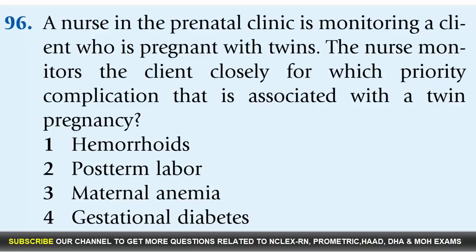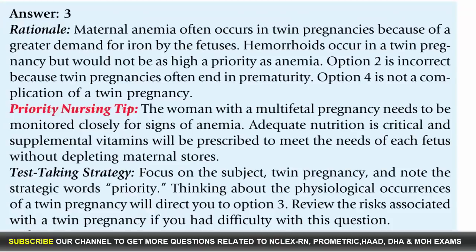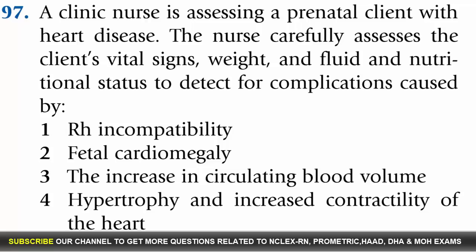Question 96: A nurse in the prenatal clinic is monitoring a client who is pregnant with twins. The nurse monitors the client closely for which priority complication associated with a twin pregnancy? Options: 1. Hemorrhoids, 2. Preterm labor, 3. Maternal anemia, 4. Gestational diabetes. Answer: 3. Rationale: Maternal anemia often occurs in twin pregnancies because of a greater demand for iron by the fetuses. Hemorrhoids occur in twin pregnancy but would not be as high a priority. Twin pregnancies often end in prematurity, and gestational diabetes is not a complication of a twin pregnancy.